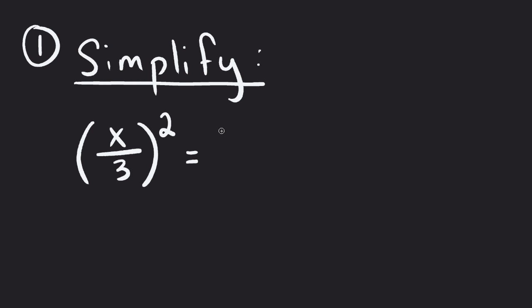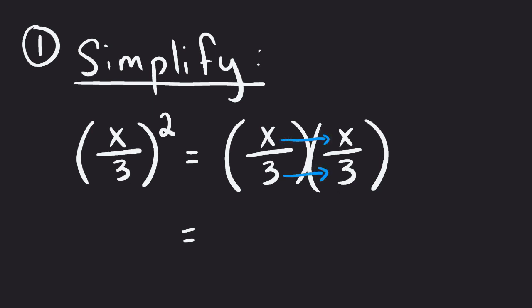What does this mean if we did it out the long way? Well, it means that we would have X over 3 multiplied by itself. So X over 3 times X over 3. And when we multiply fractions, we just multiply straight across. We go right across the top here. So X times X, which would be X squared, and 3 times 3, which would be 9.